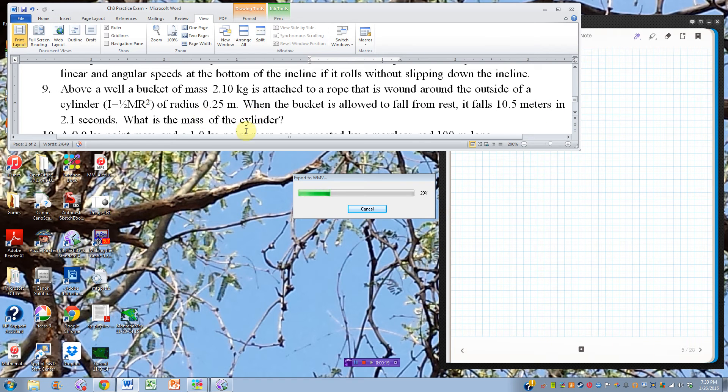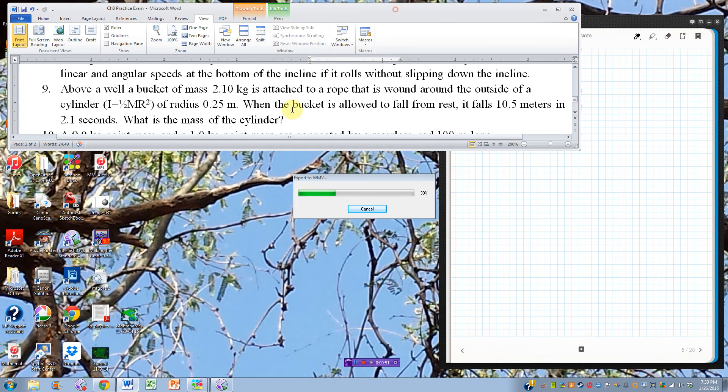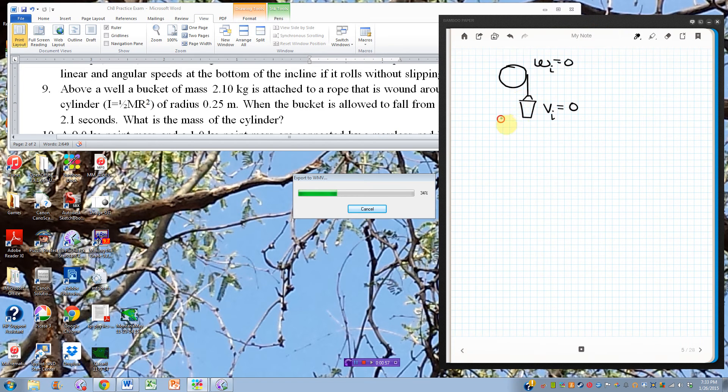So there's two ways to do this. One way is with rotational dynamics, and one way is with energy conservation. This video deals with using energy conservation to solve the problem. We need to look at a before and after picture. Before the bucket is allowed to fall, we have a cylinder that is not moving, and a bucket that is also not moving. Let's say it's at a height, starting at this height and then falling to zero. It's at a height of 10.5 meters.